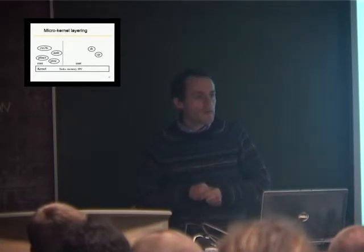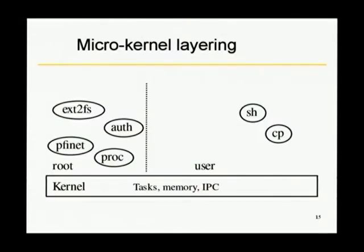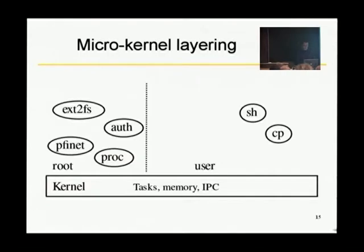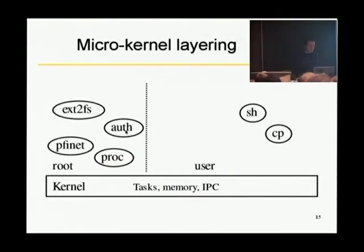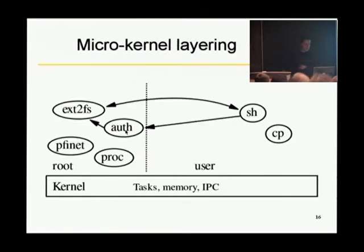Just a few reminders. The idea of the HURD is to have most of the things in userland. We have a kernel which mostly manages the tasks, the memory, and communications between processes — and that's everything it does, nothing more. Then you have pfinet for TCP/IP, ext2fs for the file system, proc for managing processes, and auth to manage the users. When a shell wants to open a file, it discusses with ext2fs to actually open the file. The kernel doesn't even know about open file — all it does is communications between processes.